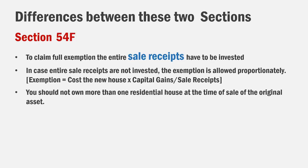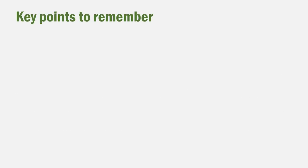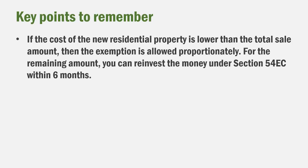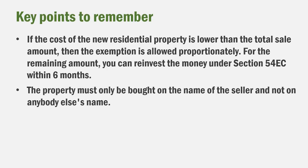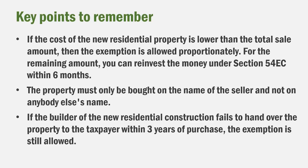There is also a reversal condition. If you sell the new property within 3 years, or if you purchase another property within 2 years, then the exemption previously claimed will be reversed and taxed as long-term capital gains in that year. Additionally, the property needs to be in your own name to qualify for the exemption. If you have paid for the property but the builder has not given possession, you can still claim the exemption.